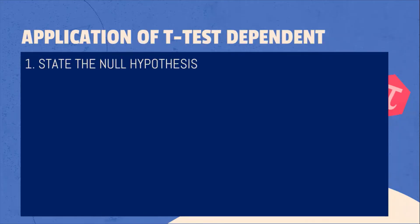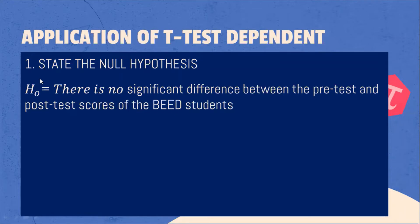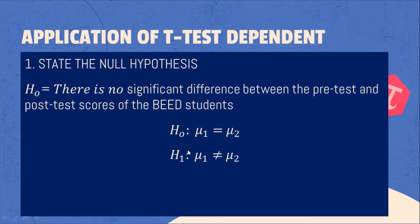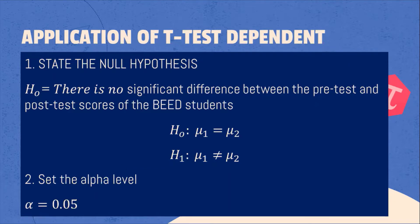First step: state the null hypothesis. The null hypothesis (H₀) states there is no significant difference between the pre-test and post-test scores of the BED students. The alternative hypothesis states there is a significant difference between the pre-test and post-test scores. We will also set the alpha level at 0.05, which is the margin of error or 95% level of significance.